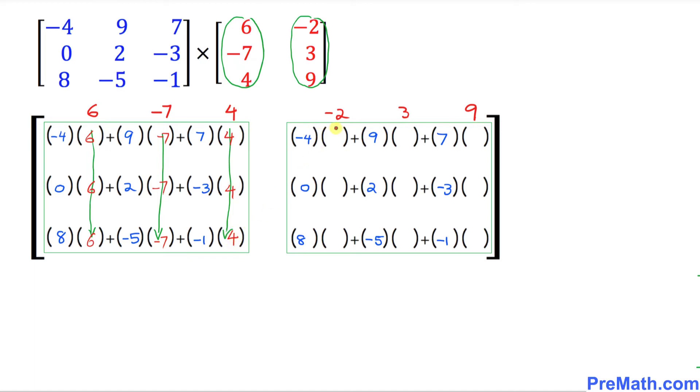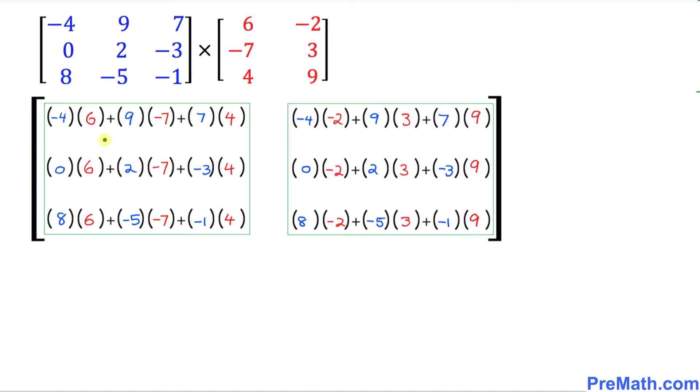So likewise, negative 2 is going to get filtered in all the way over here. Same thing, 3 down over here and 9 as well. And here is our final product after filling in the blanks in all these slots.